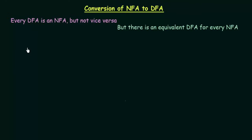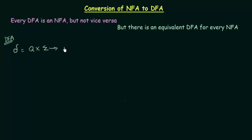We have two statements here, but how do we justify this? When we studied DFA and NFA, we learned that both are defined using five tuples, and all the tuples were the same except for one — the transition function DEL. In case of DFA, DEL maps Q cross sigma to Q. In case of NFA, DEL maps Q cross sigma to 2 power Q. This was the only tuple that was different.